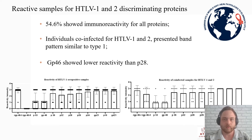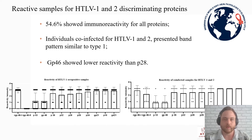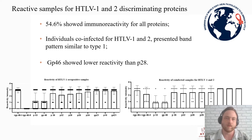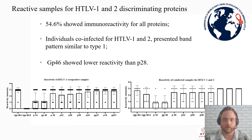Samples co-infected with HTLV-1 and HTLV-2 showed a similar band pattern when compared to type 1. Both showed 54% immune reactivity for all band intensities, and immune reactivity in almost all tests for P19, GP21, and GD21. However, GP46 — the surface glycoprotein with an exacting role in immune response — showed lower reactivity, as did P28, an accessory protein specific for type 2.